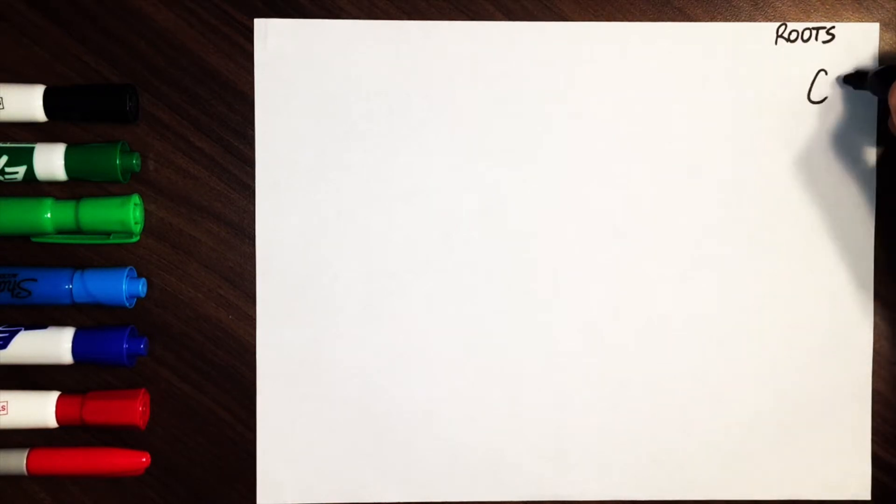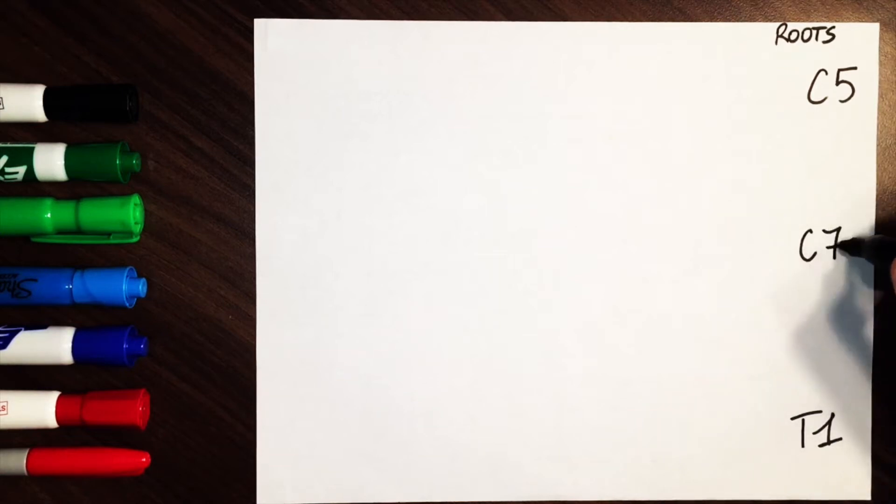First, you want to start from the five roots of the nerves: C5, C6, C7, C8, and T1.